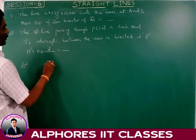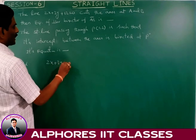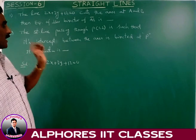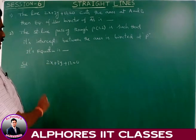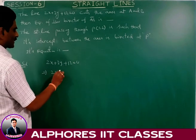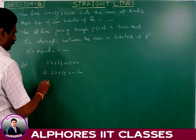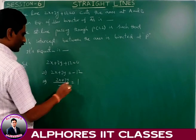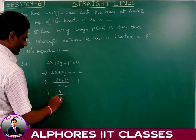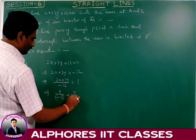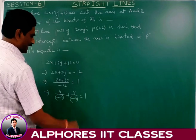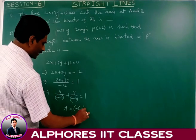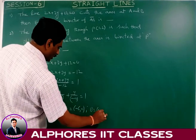The given line is 2x plus 3y plus 12 equal to 0. It cuts the coordinate axis at A and B. First we reduce the given equation into intercept form. That means 2x plus 3y equals minus 12. Dividing both sides by minus 12, we get x by minus 6 plus y by minus 4 equals 1. So A is minus 6 comma 0 and B is 0 comma minus 4.